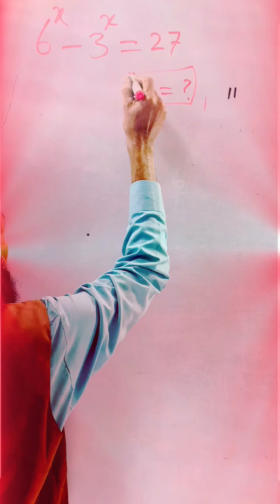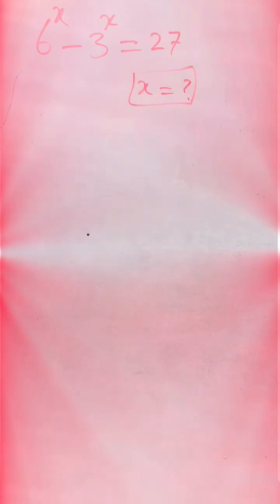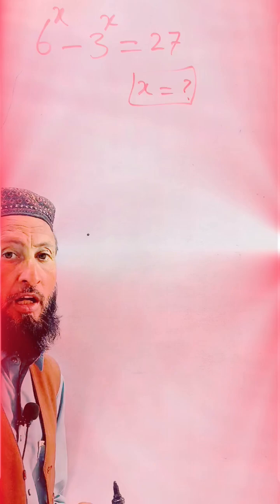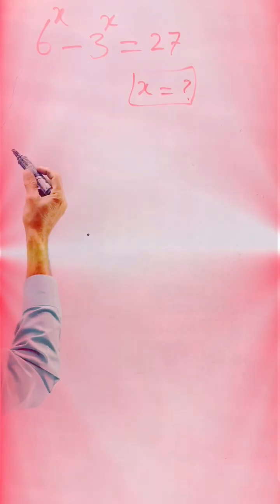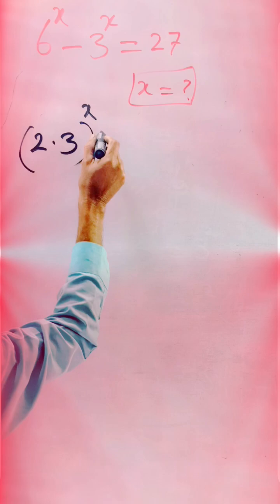The value of x is unknown, very logical and tricky question for you today. So first of all, we are making the factor of 6 and 27. 6 we can write as 2 multiply by 3, whole exponent of x, minus 3^x. And 9 multiplied by 3 we can write 27.